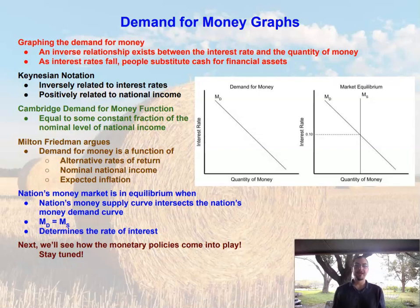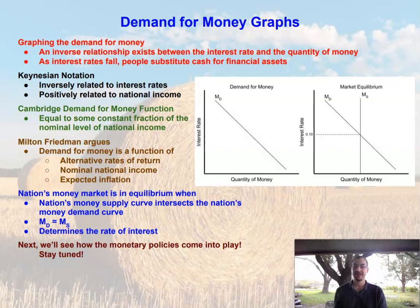Now that we have that function for the aggregate demand for money, that function was equal to the autonomous cash held, minus the sensitivity to the interest rate times the interest rate, plus the sensitivity to national income times the national income. So those are our components: we keep a certain amount of autonomous cash on hand, the interest rate affects it, and national income affects it as well.